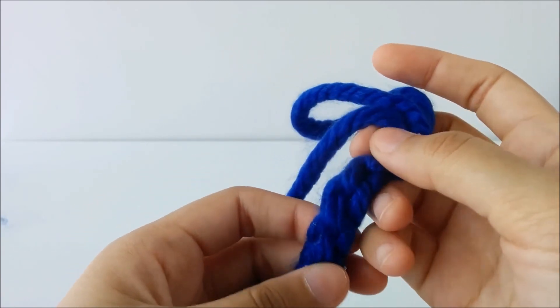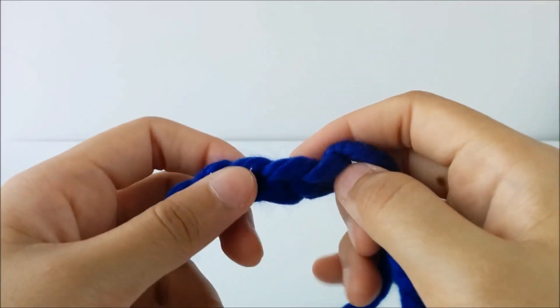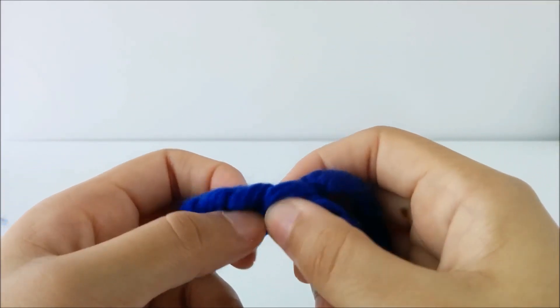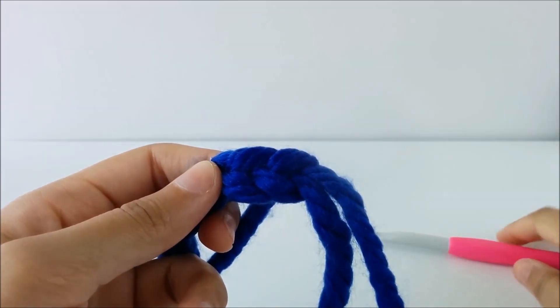On the back of it, you also have this bump right here. And this is the back of the chain. A lot of time when you're working in the rows later on, you're going to go into the center of this chain.